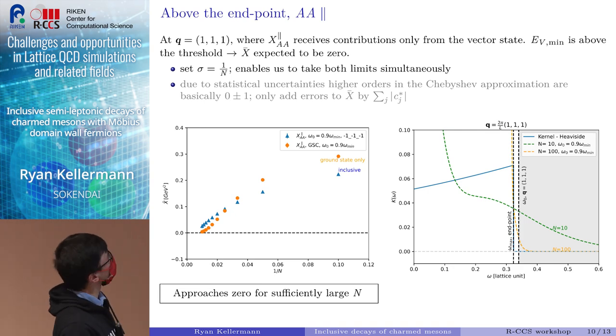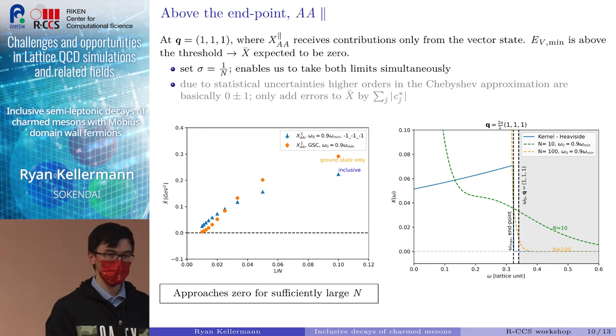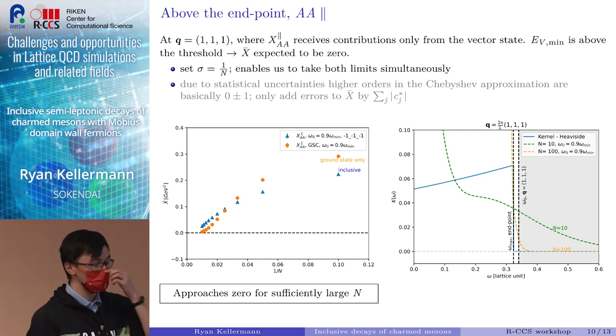We see that our values for X_VV parallel seem to be in the right ballpark, except for our largest momentum insertion, where we see rather large discrepancies between X_VV parallel and X_AA parallel. In the next one I want to focus on X_AA parallel, and also introduce the method or the first idea on how we estimate our errors. For X_AA parallel, at momentum insertion (1,1,1), we know that this only receives contributions from the vector meson state.